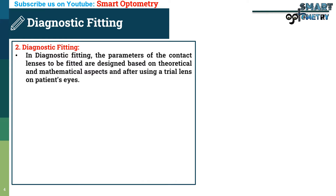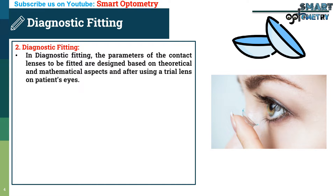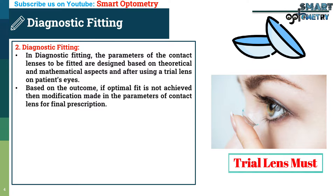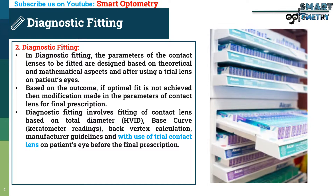In diagnostic fitting, the parameters of the contact lenses to be fitted are designed based on theoretical and mathematical aspects and after using a trial lens on the patient's eye. Based on the outcome, if optimal fit is not achieved, then modifications are made in the parameters of the contact lens for the final prescription. That means diagnostic fitting involves fitting of contact lens based on total diameter, base curve, back vertex calculation, and manufacturer guidelines, with the use of a trial contact lens on the patient's eye before the final prescription. The practitioner uses a trial box of contact lenses from where he chooses a trial contact lens that matches or closely matches the empirical data of the patient's eyes.